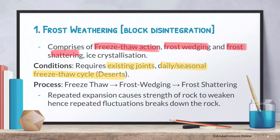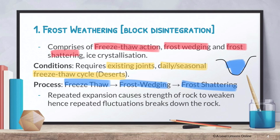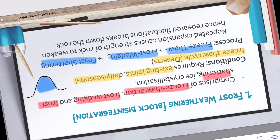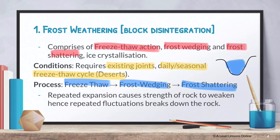So how it works, step by step: firstly you have got freeze-thaw, followed by frost weathering, and lastly frost shattering. These all drive at a very similar case whereby, firstly, you have got an existing joint. What happens is that water starts to fill up inside the joint, and when water fills up, this will actually cause a lot of the water to freeze. Then when it comes to hot weather again, the water will melt. Repeated action of this is what will result in your freeze-thaw action taking place. Repeated expansion will actually cause the strength of rock to weaken, hence causing the rock to actually break down.